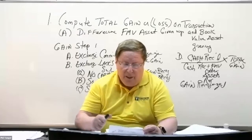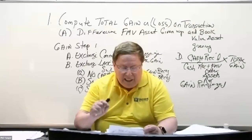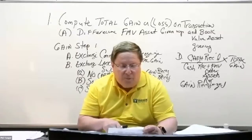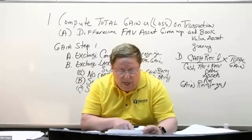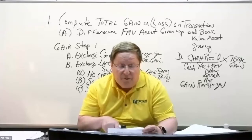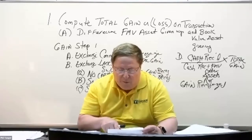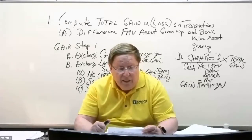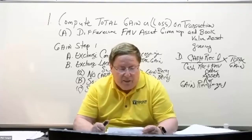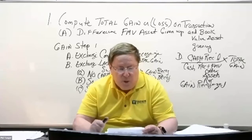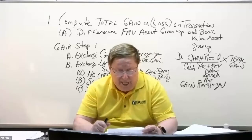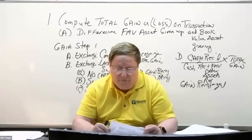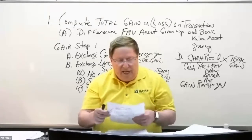Let's look at the journal entry. The asset received is going to be your plug figure. We debit accumulated depreciation for $26K, credit the asset cost given up $72K, record the gain on disposal of $9,000. Cash boot was paid, so we credit cash $13,000, and the plug figure is $68,000 for the asset received.